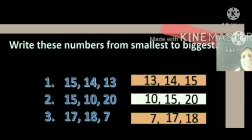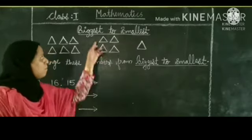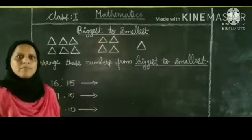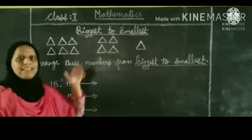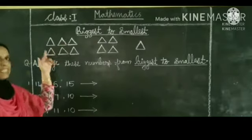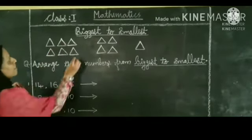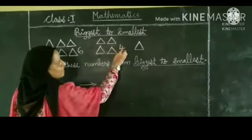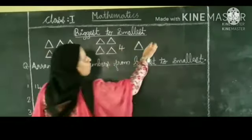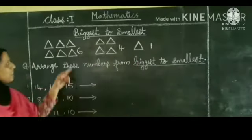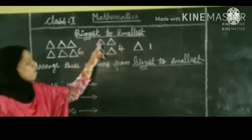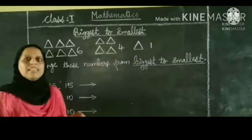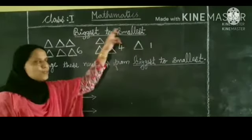The biggest number is 18. So the order from smallest to biggest is 7, 17, 18. Our next concept is biggest to smallest. Here you are seeing triangles. Counting the triangles you get 6, 4, and 1 triangle. The numbers 6, 4, and 1 are in the order biggest to smallest.